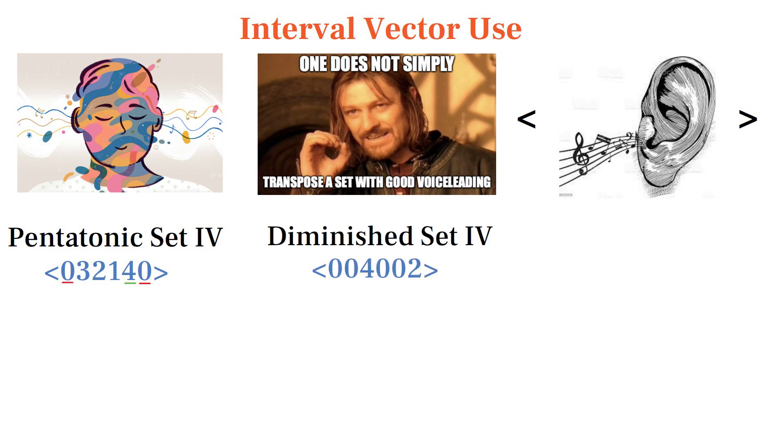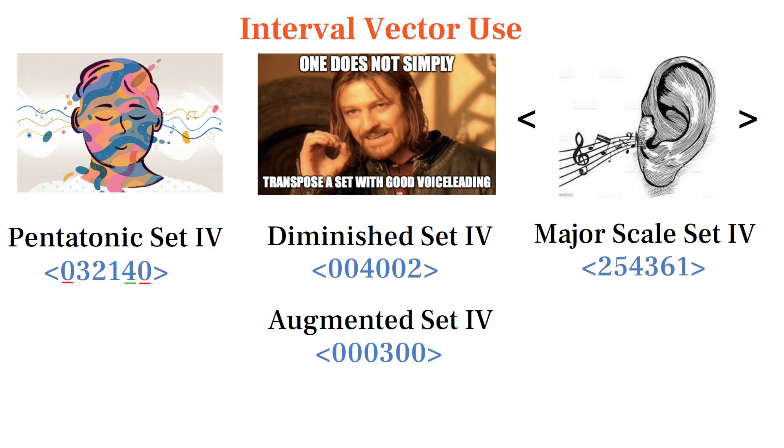Equal divisions of the octave like diminished and augmented have very concentrated vectors on certain intervals. Interestingly, the major scale has a different amount of each interval in its vector.